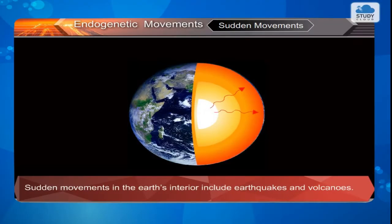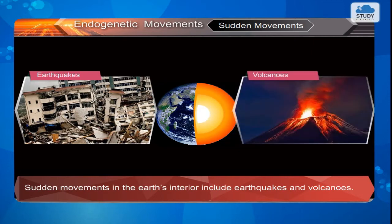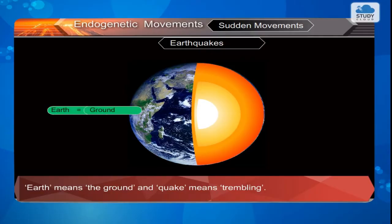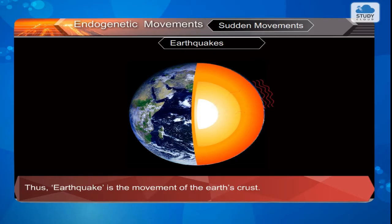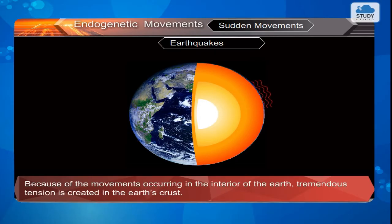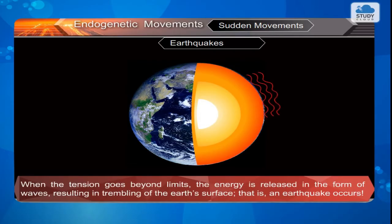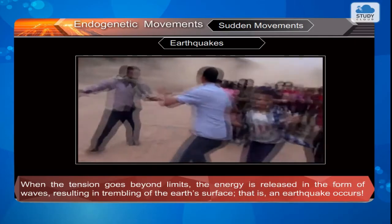Sudden movements: Sudden movements in the earth's interior include earthquakes and volcanoes. Earthquakes: 'Earth' means the ground and 'quake' means trembling. Thus, an earthquake is the movement of the earth's crust. Because of the movements occurring in the interior of the earth, tremendous tension is created in the earth's crust. When the tension goes beyond limits, the energy is released in the form of waves, resulting in trembling of the earth's surface — that is, an earthquake occurs.